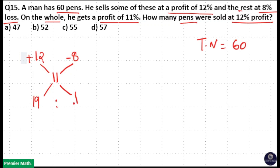So 19 to 1 is the ratio of number of pens sold at 12% profit to number of pens sold at 8% loss. You need to find out the number of pens sold at 12% profit.